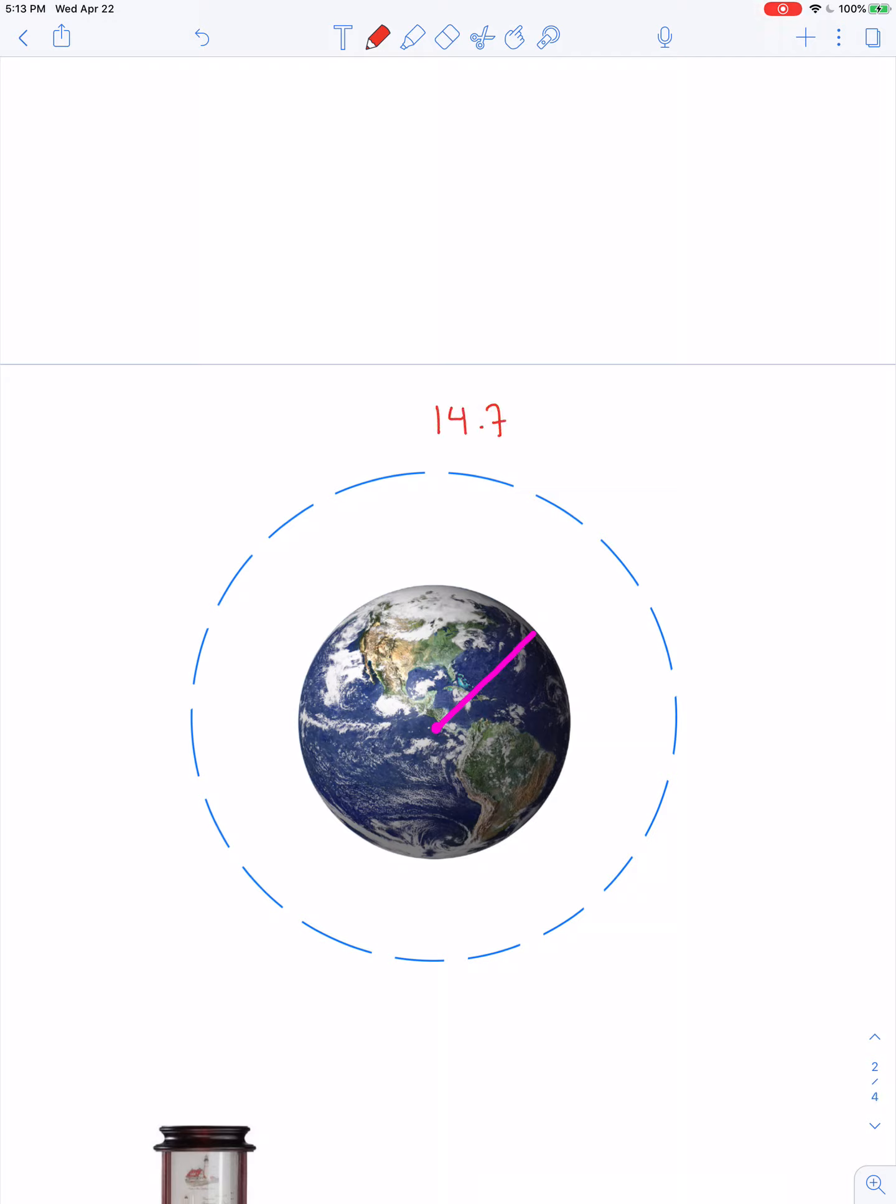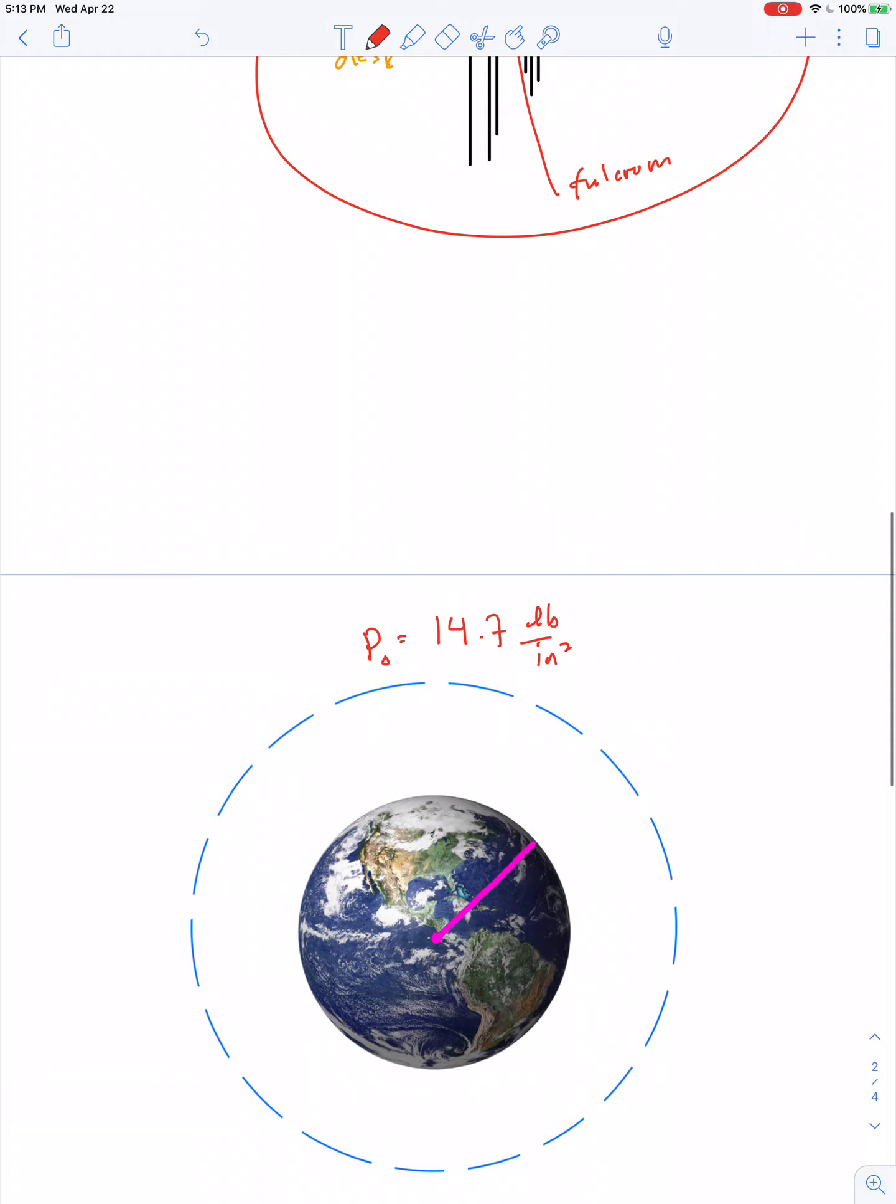So 14.7 is the magic number - 14.7 pounds per square inch. Whenever you think of atmospheric pressure, consider that value. Although that's not metric, so let's see if we can do a unit conversion here.